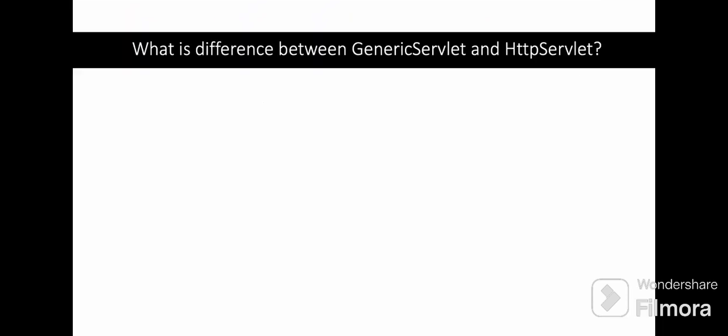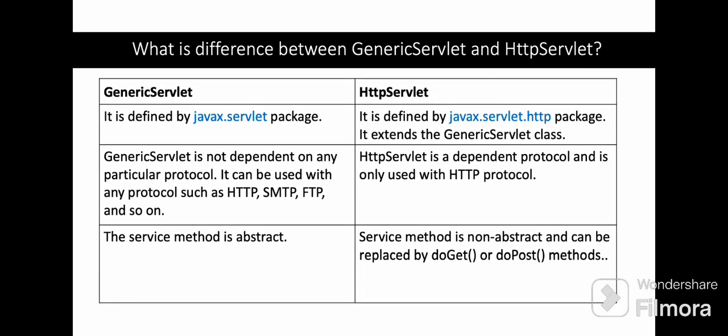What is the difference between GenericServlet and HttpServlet? GenericServlet is defined by the javax.servlet package, whereas HttpServlet is defined by the javax.servlet.http package and it extends the GenericServlet class. GenericServlet is not dependent on any particular protocol — it can be used with any protocol such as HTTP, SMTP, FTP and so on. Whereas HttpServlet, as the name says, is protocol-dependent and is used with only the HTTP protocol. In GenericServlet the service method is abstract, whereas in HttpServlet the service method is non-abstract and can be replaced by doGet or doPost methods.